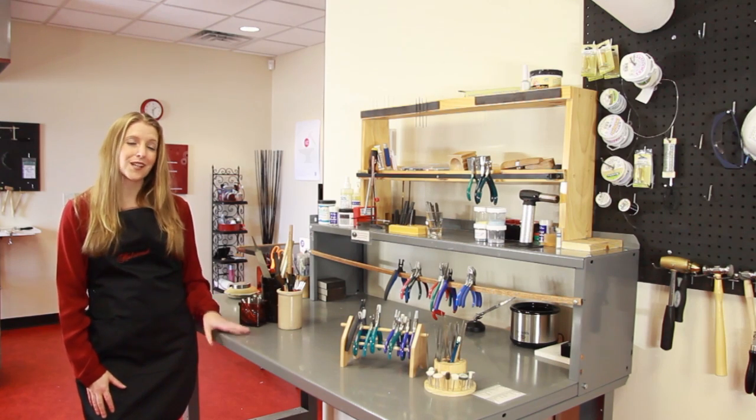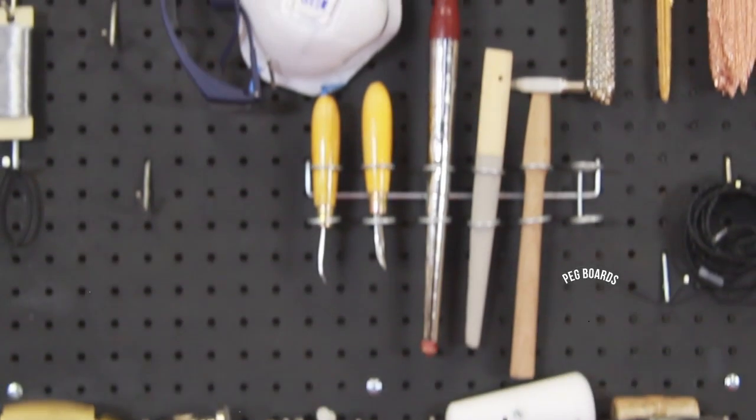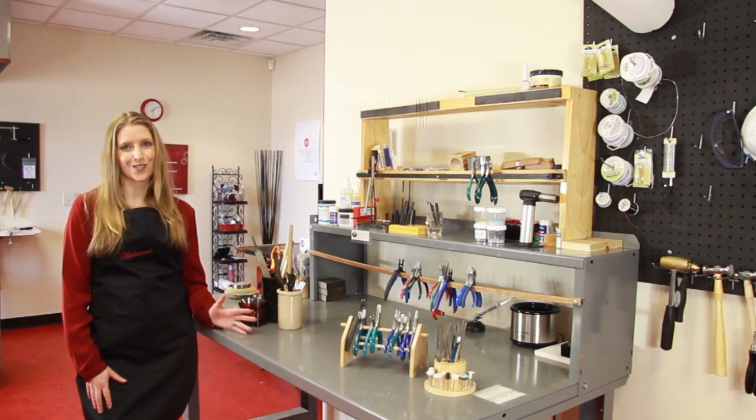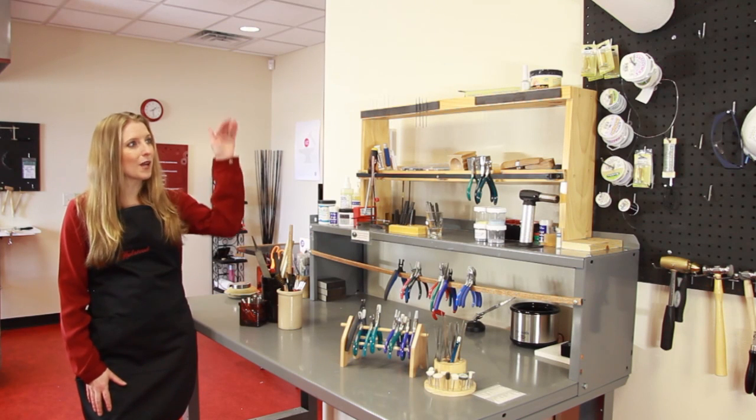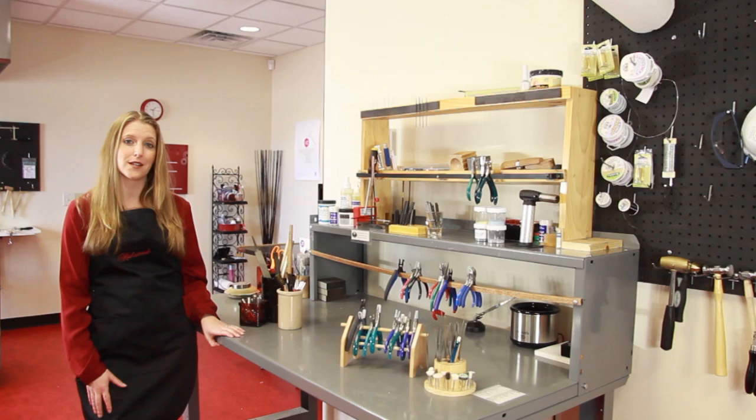Number two, pegboards. We use pegboards all over the Halstead Jewelry Studio. These are an inexpensive and easy solution you can purchase at any hardware supply store. You mount these pegboards on the wall and then you can choose different hooks and brackets for hanging your tools and supplies.